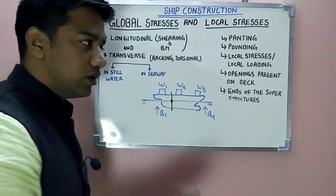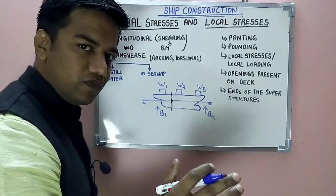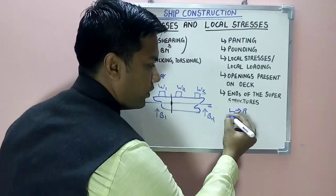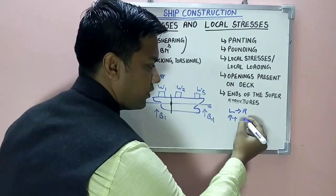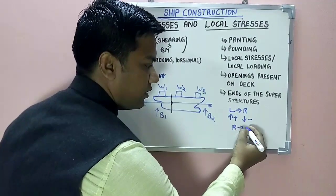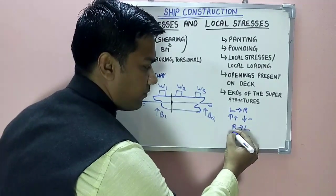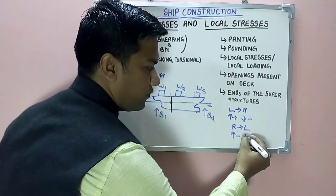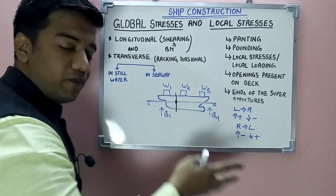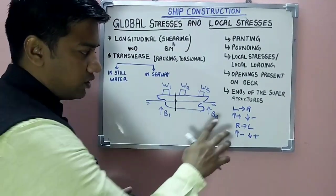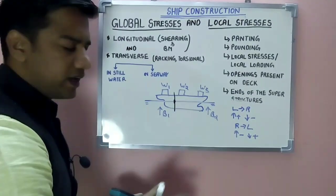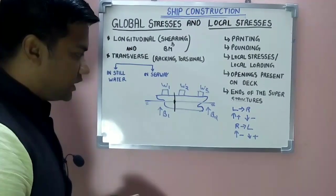You have to set up a sign convention first. From left to right: upward forces are positive, downward forces are negative. From right to left: upward forces are negative and downward forces are positive. Remember, from left to right and right to left the signs have to be different. Now let's see how the equation comes from this.